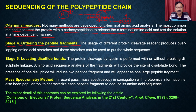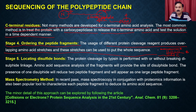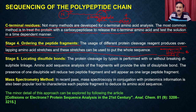Stage 4 is the ordering of the peptide fragments. Usage of different peptide cleavage reagents produces overlapping amino acid stretches, and these stretches can be used to assemble the whole sequence. For example, trypsin generates fragments A, B, and C — when you sequence them, fragment A has a portion overlapping with B, and C has a portion overlapping with B. By doing this overlapping sequencing, you can deduce the final sequence and put together all the fragments.